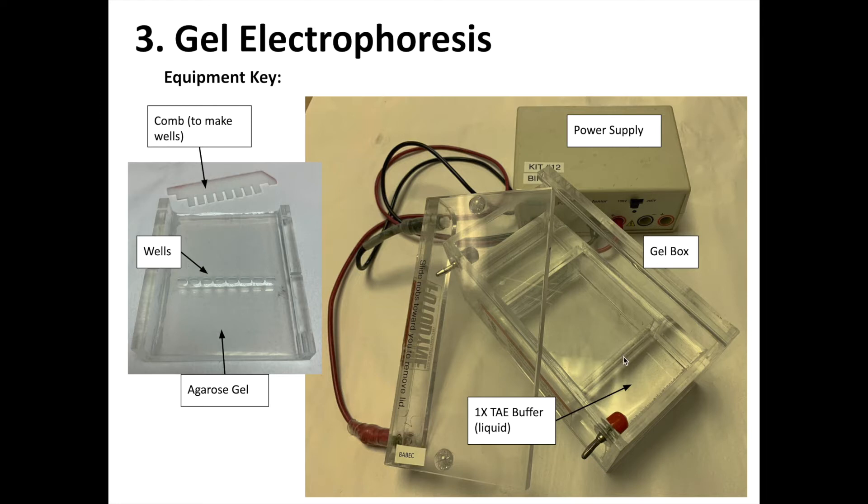Here's the lid of the gel box. Before putting that on, we add some more TAE buffer and attach the leads here to the power supply. And then we'll run electricity through the gel to help separate our molecules.